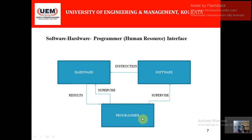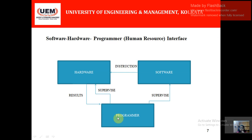This picture depicts the hardware-software-programmer interface. The programmer, who is the human resource, supervises both hardware and software. Whatever software changes are made, those instructions ultimately instruct the hardware to perform the necessary action, and the results are obtained by the programmer. If the programmer wants to alter some results, they will change the software so that it changes the necessary instructions to get the required result. Next class we will be talking about the layers of a computer.